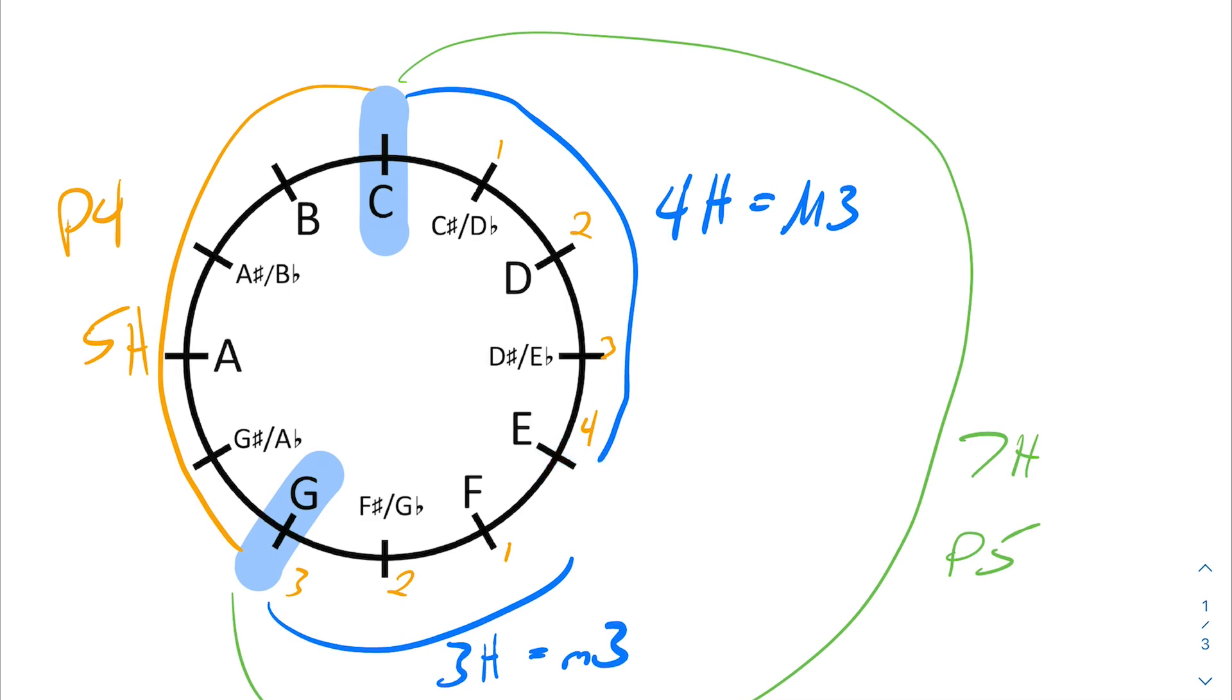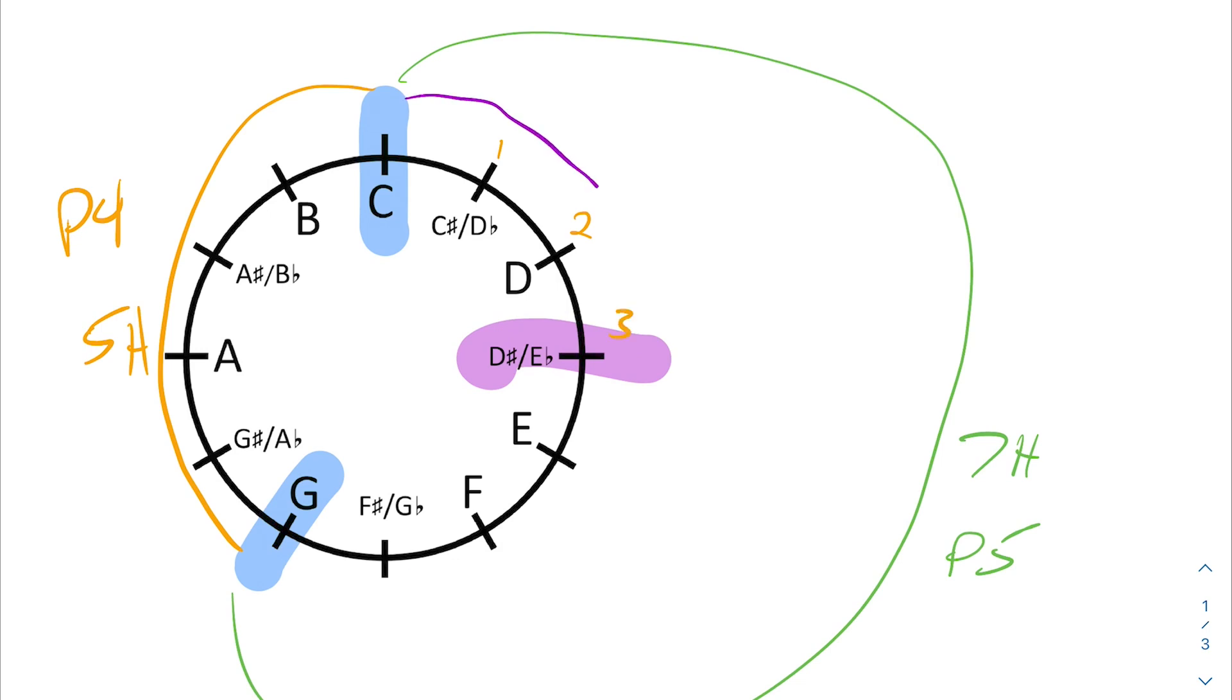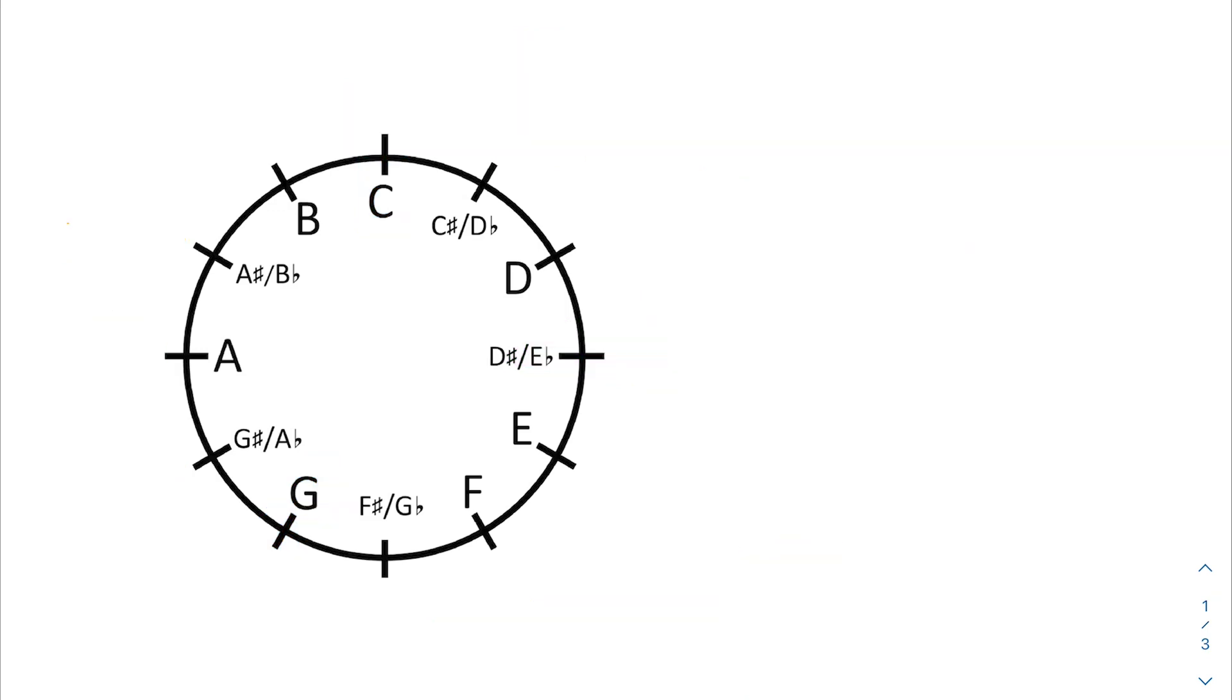We can use it to understand major triads like this. But let's say we wanted to do a minor triad instead. With our minor triad, we would just lower the third. We have our 3 half steps there, which would be our minor third, versus now the E flat to the G would be our 4 half steps, being our major third. So it's helpful for triads like this.